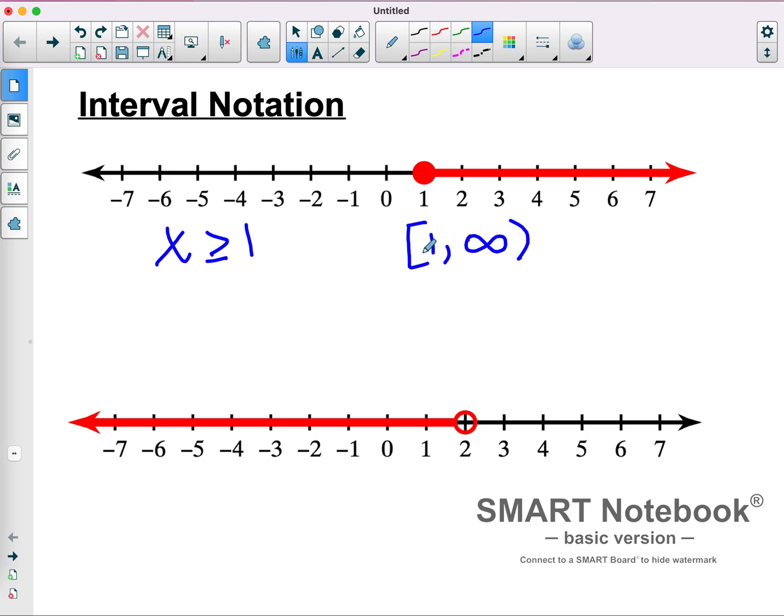In this case, it'd be all the values from 1 to infinity. This is a defined point at 1. It's equal to 1, so we're going to have a bracket there.